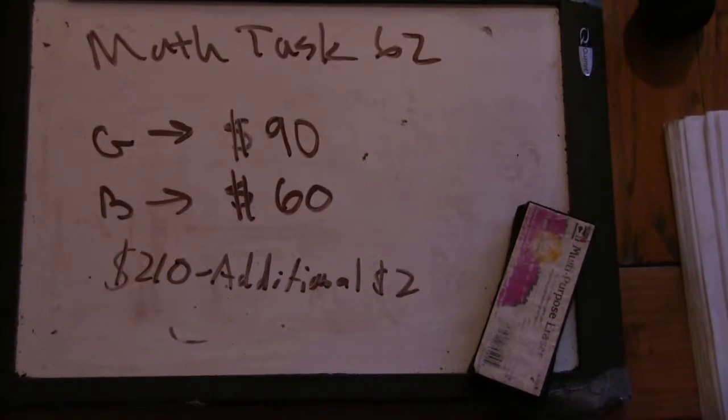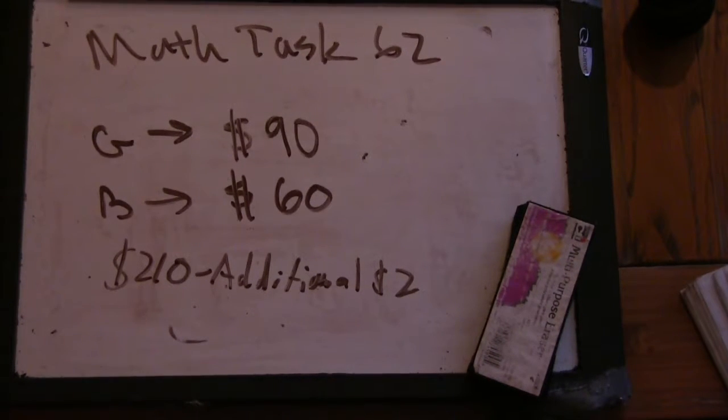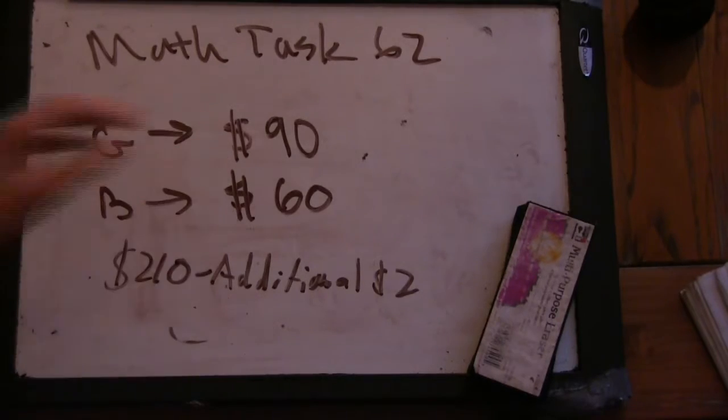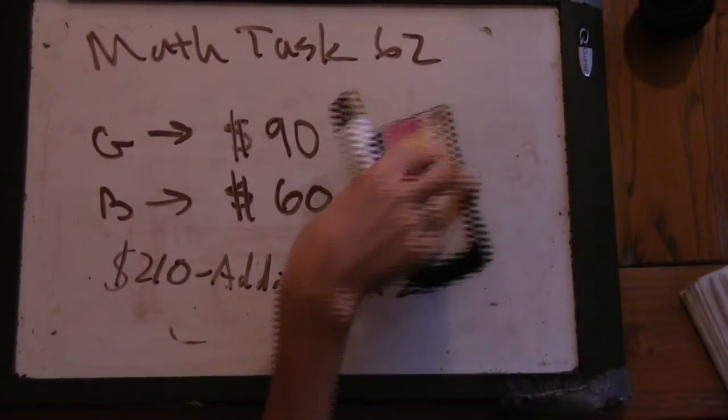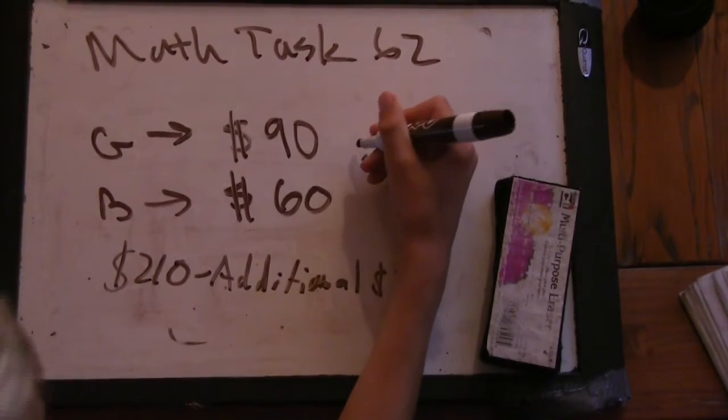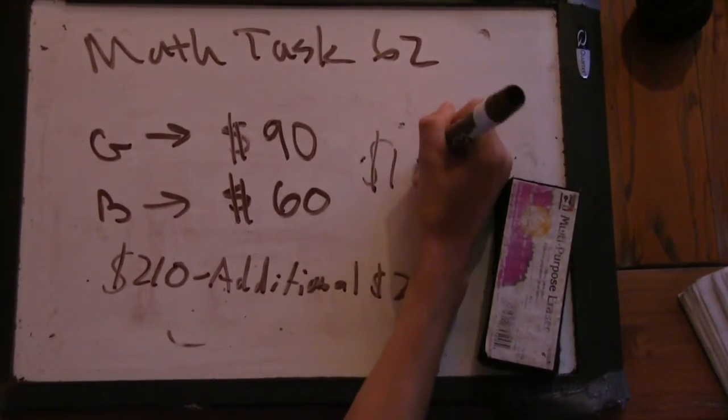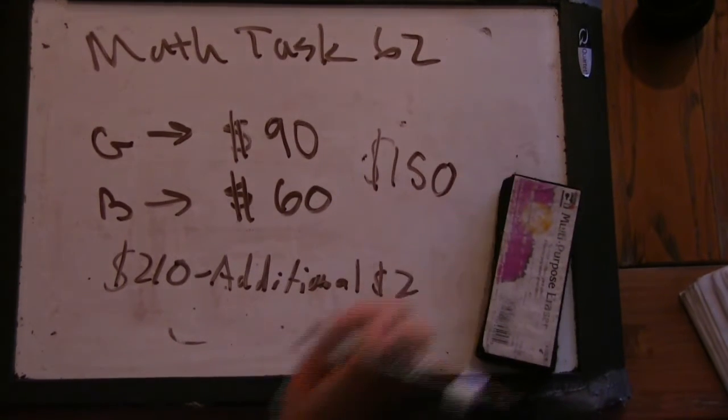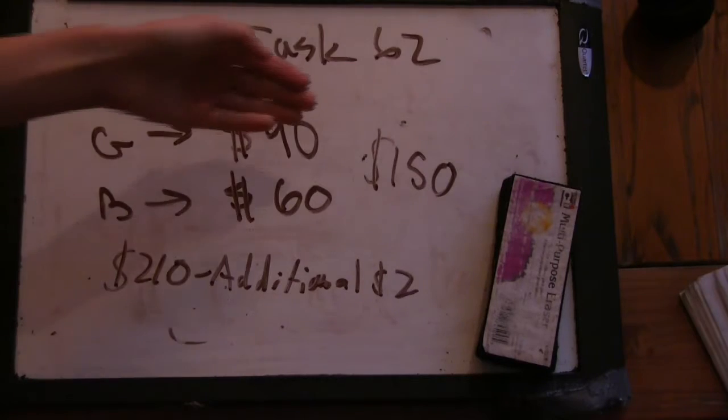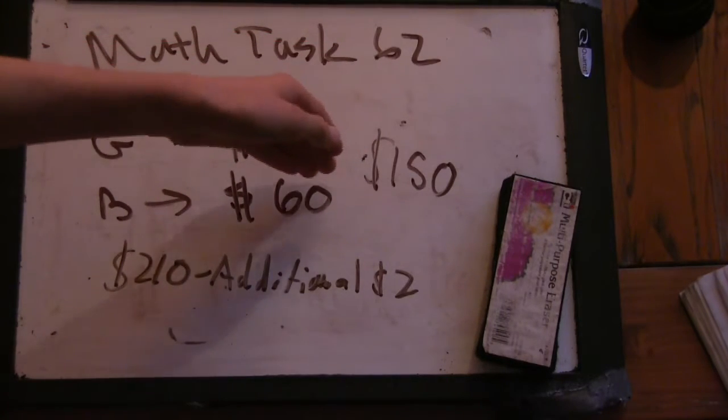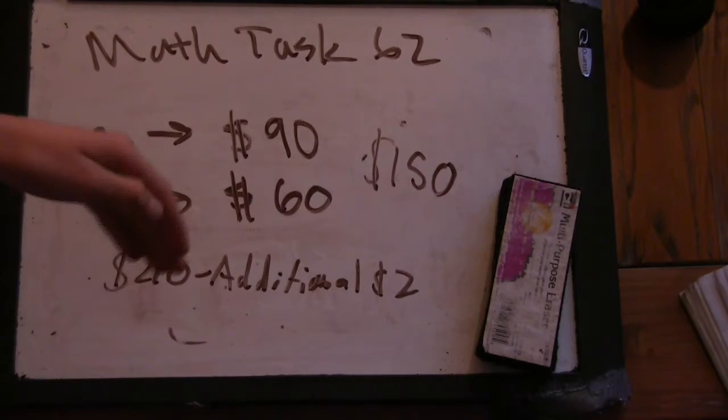The cost before buying gifts, before the additional $2, is $150. So gifts must have cost $60, because the original money is $150 and plus the cost for gifts is $210.